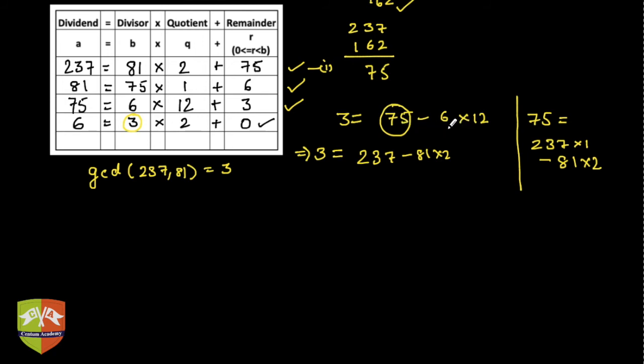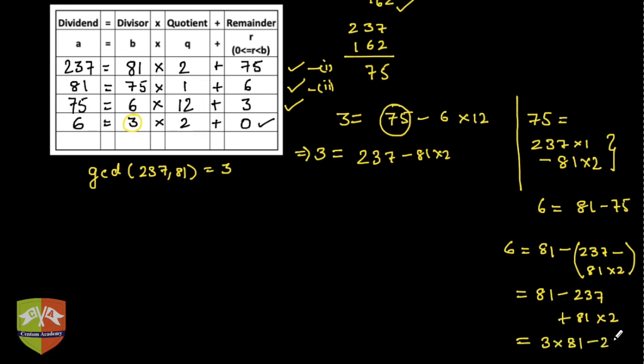Now 6 can be expressed as, if you see the second equation, 6 is equal to 81 minus 75. And 75 again can be written as that value. So 6 is equal to 81 minus 75, and 75 is 237 minus 81 into 2. This is my 75. So it can be simplified further. 6 can be written as 81 minus 237 plus 81 into 2. So finally it is 3 into 81 minus 237. So I can replace 6 also here. What is 6 now? 3 into 81 minus 237. Why did I do this exercise? Just to express 6 in terms of my a and b, which was 237 and 81.